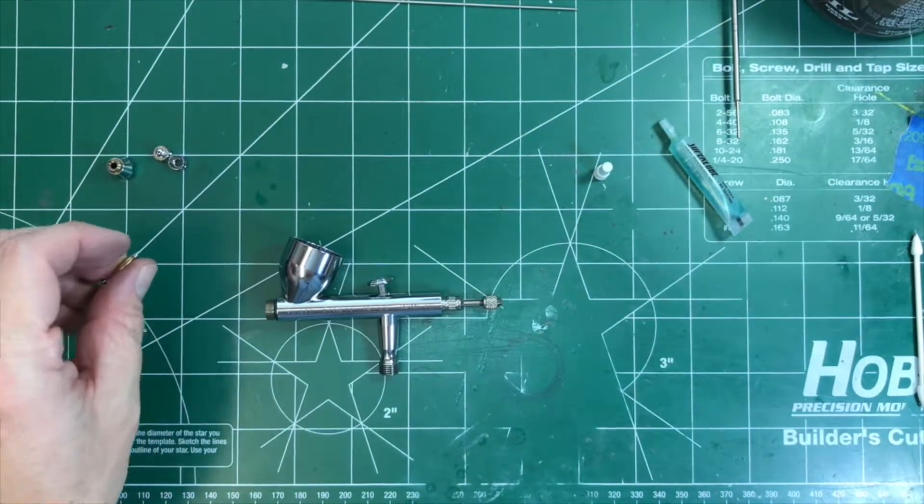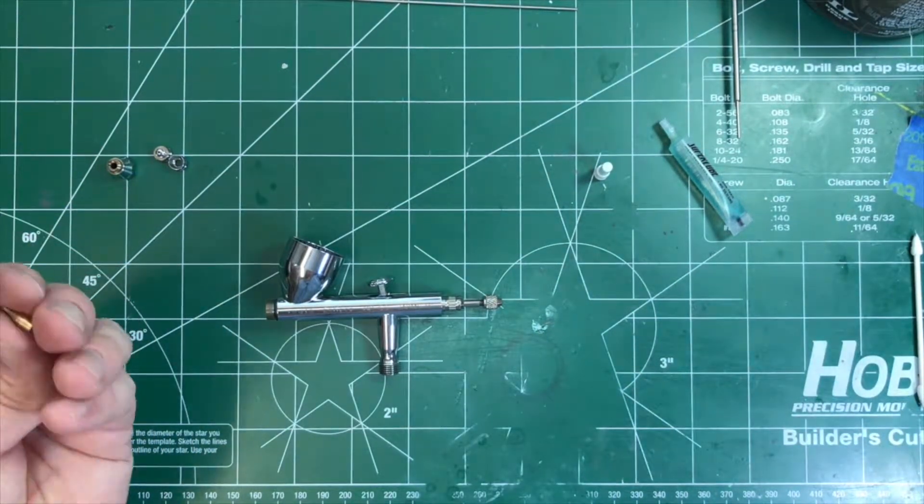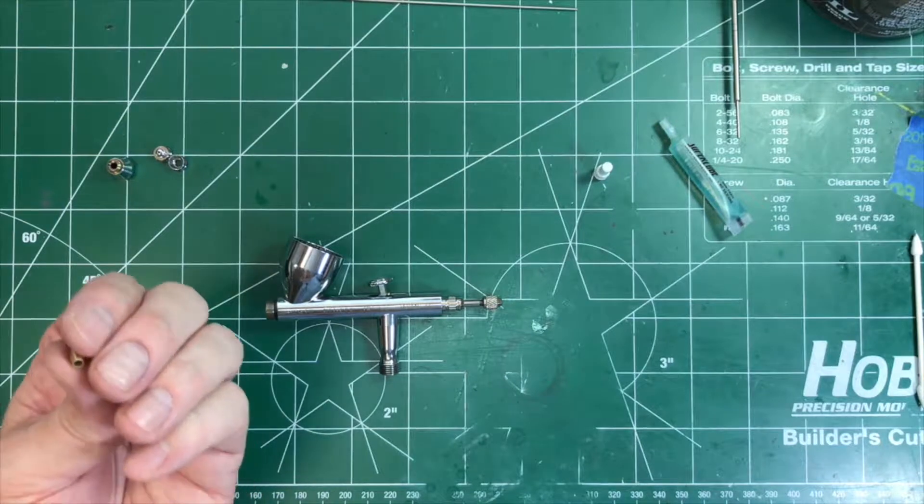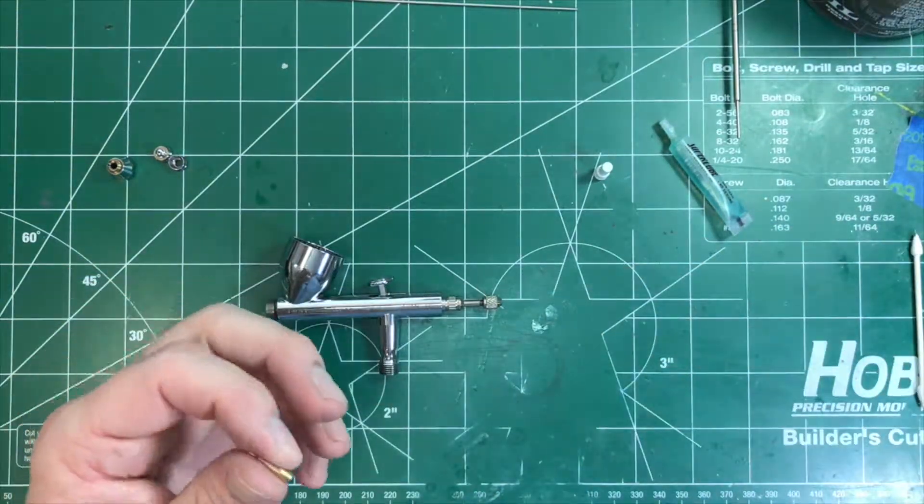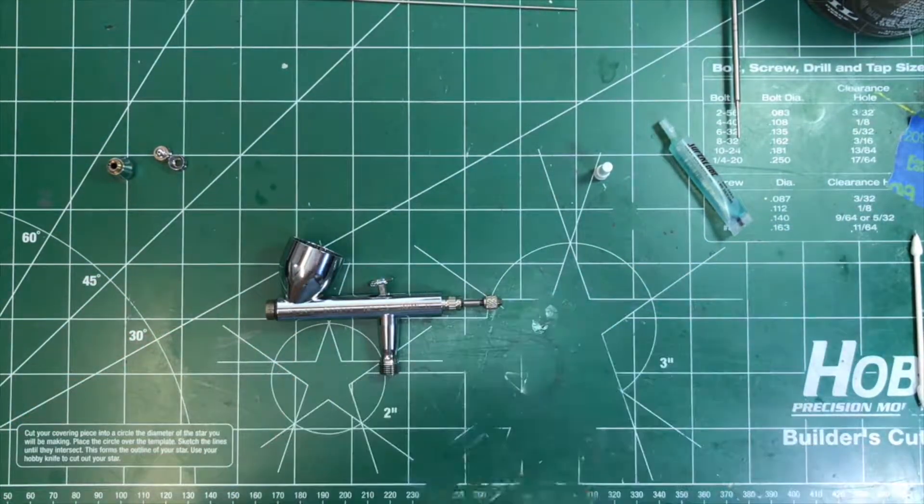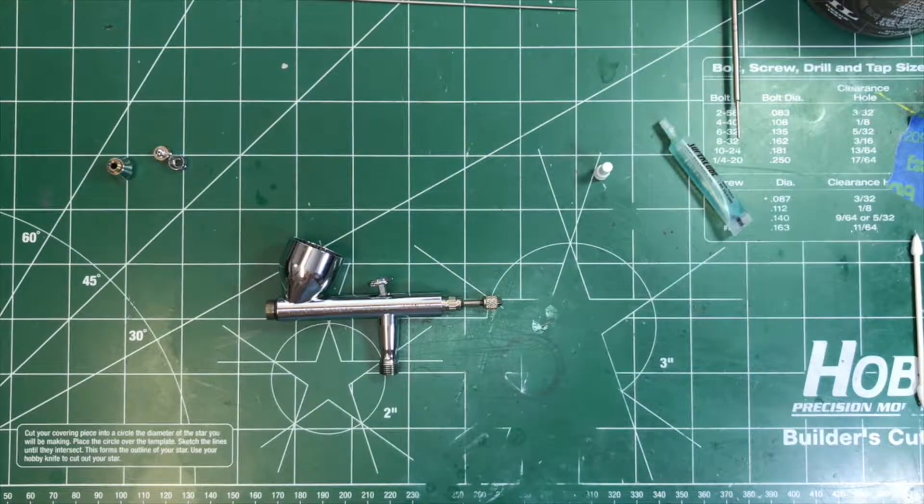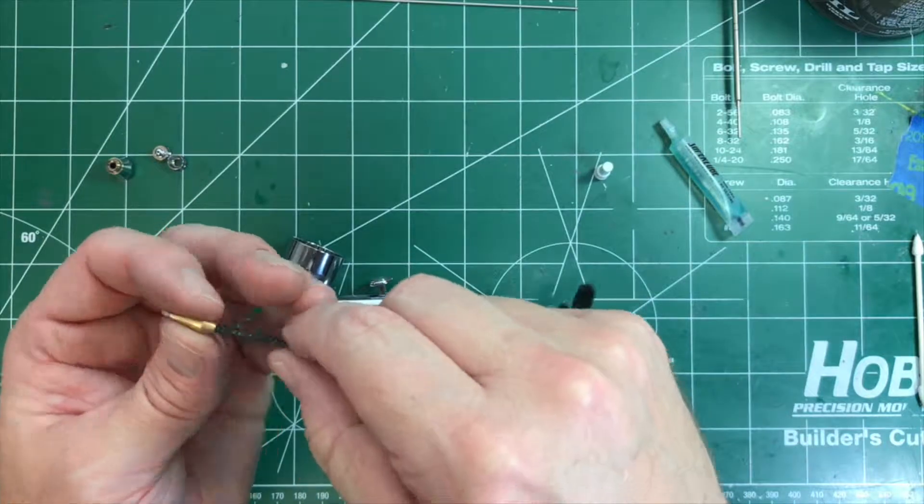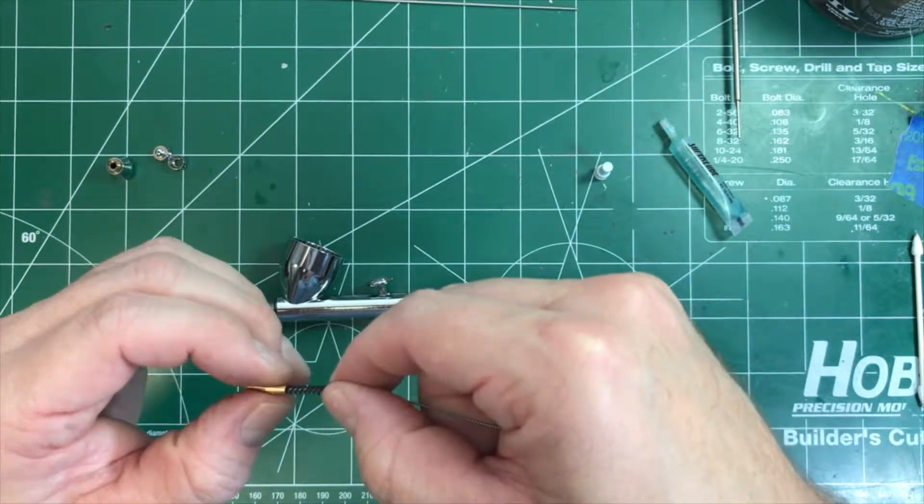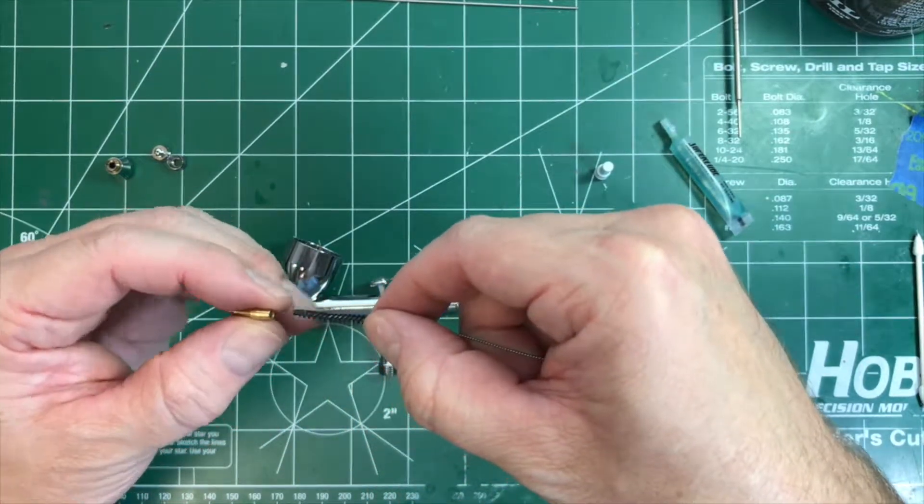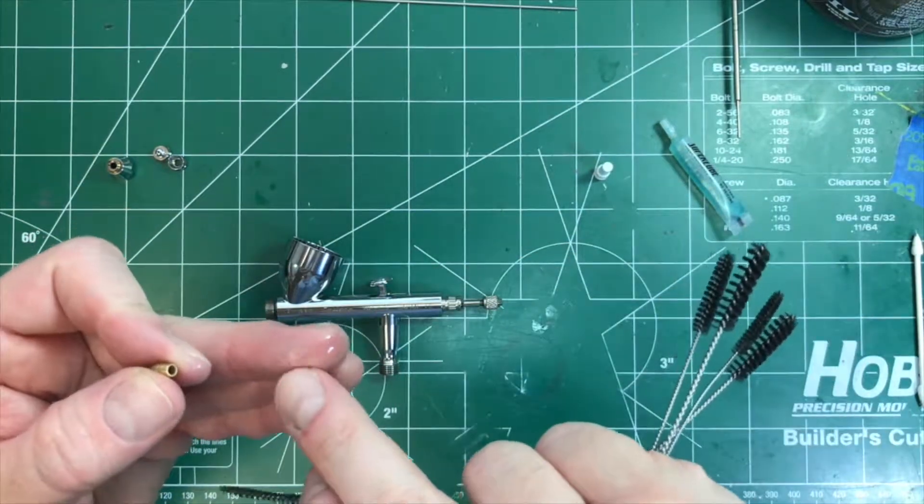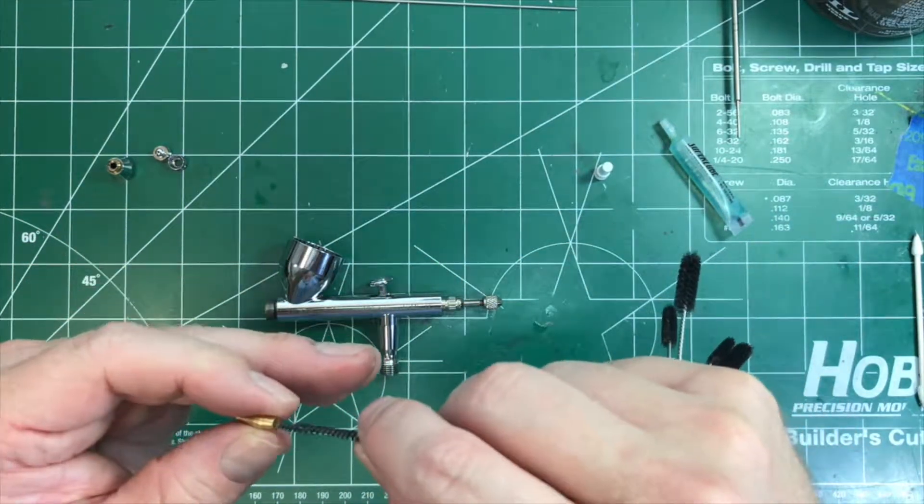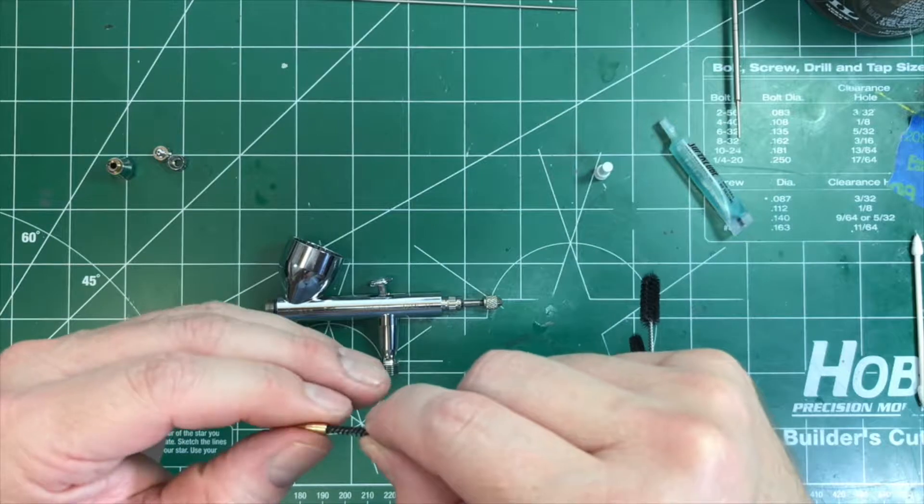And then again, we go back to our brushes. A lot of times that reamer is really good for the nozzle, but for the housing, we go back to our little brushes here—brush set. Dip that in our cleaning solution of choice, and then just kind of gently get that in there, twist it around, and get all of our paint. You can see a little tiny bit left in there that may have been on the brush itself.